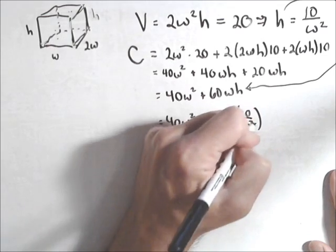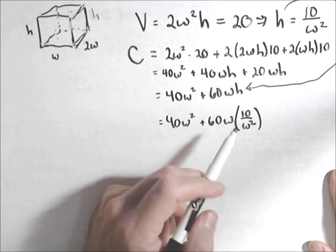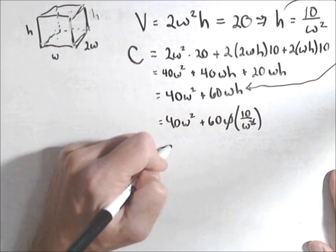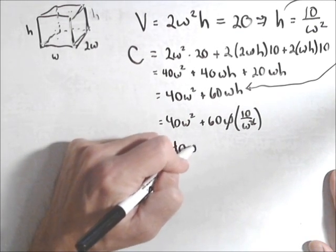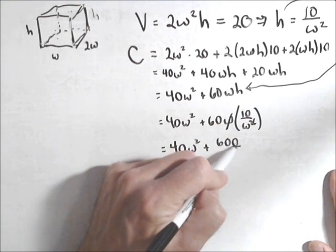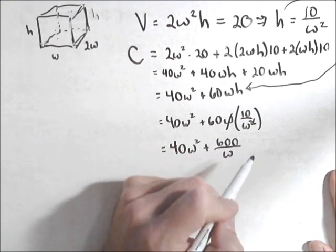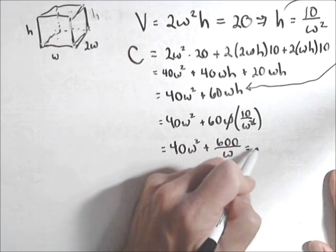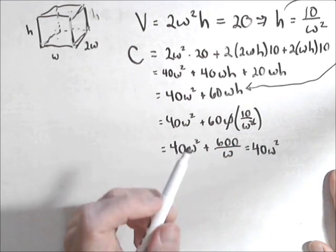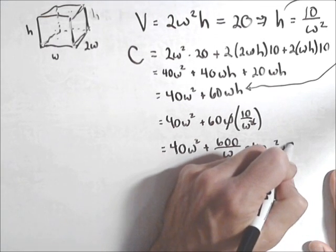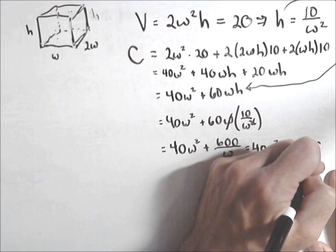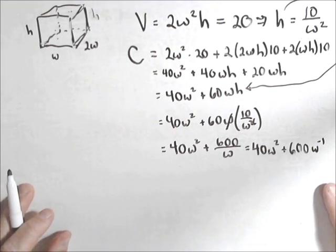And let's simplify so we can make this as easy on ourselves as possible. We can cancel out one of the w's with one of those. And we'll multiply the 6 by the 10. So 40w squared plus 600 over w. Or I'm going to write it this way. 40w squared plus 600w to the minus 1 because we're going to be taking the derivative.